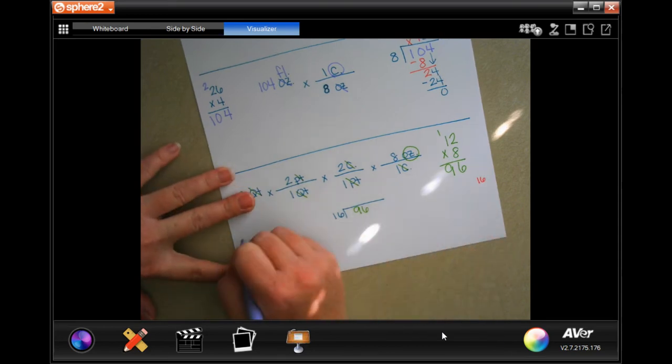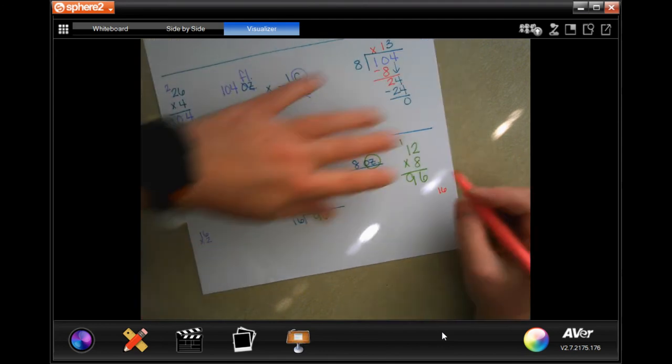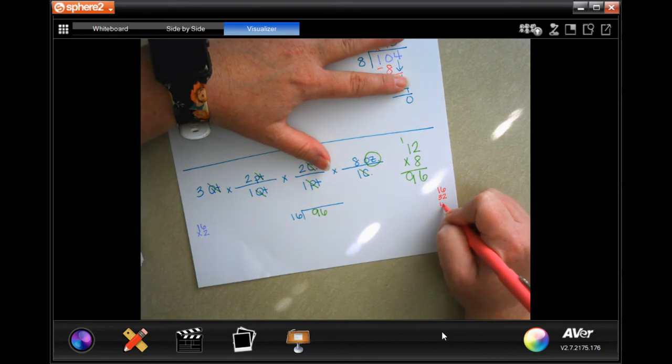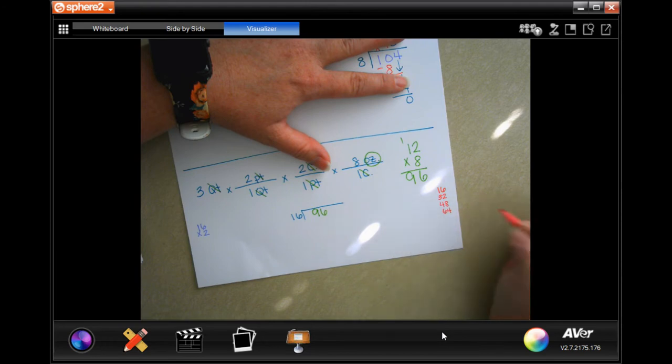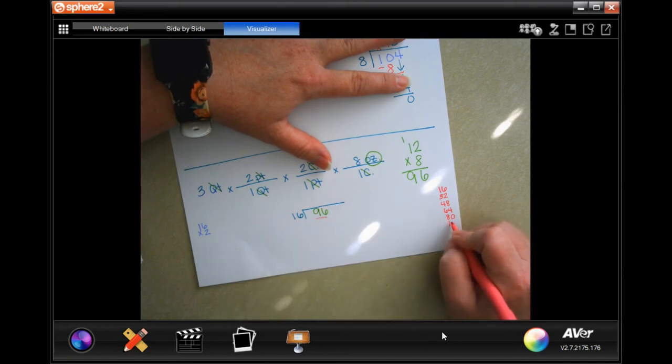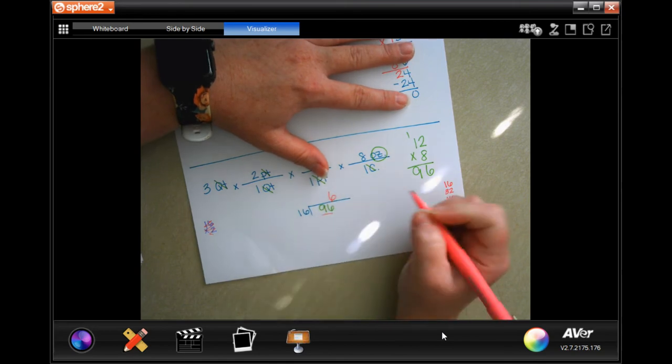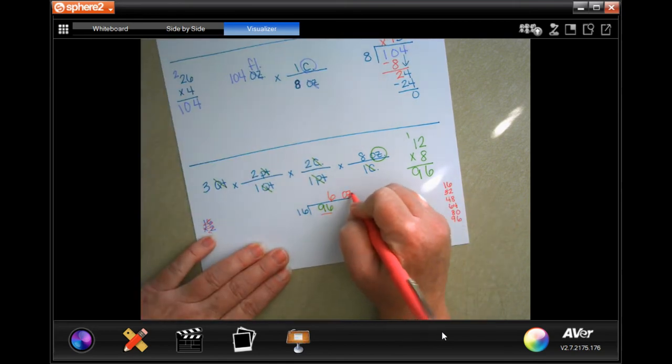So we know 16 times 1 is 16, 16 times 2 is 32, 16 times 3 is 48, 16 times 4 is 64, and 16 times 5 is 80. Which means if we added 16, we would get 96, so I guess we don't have to actually do the multiplication. So we're going to go one, two, three, four, five, six. So six ounces each.